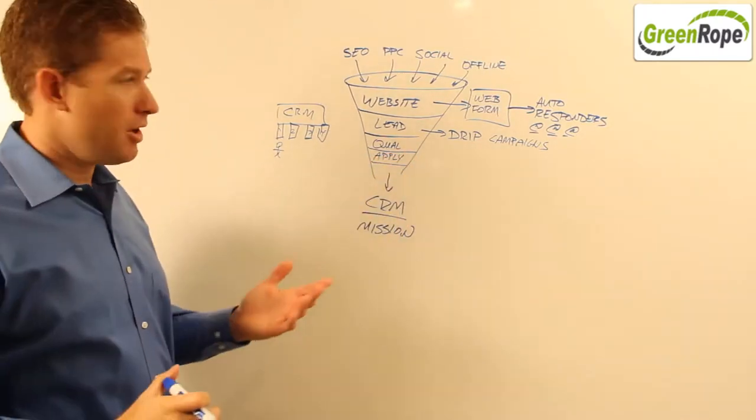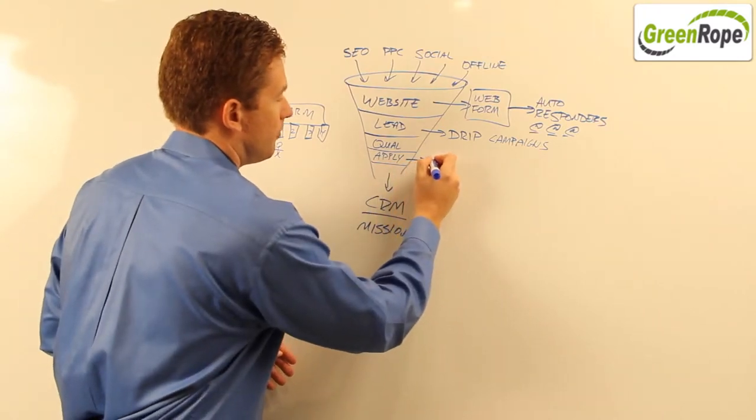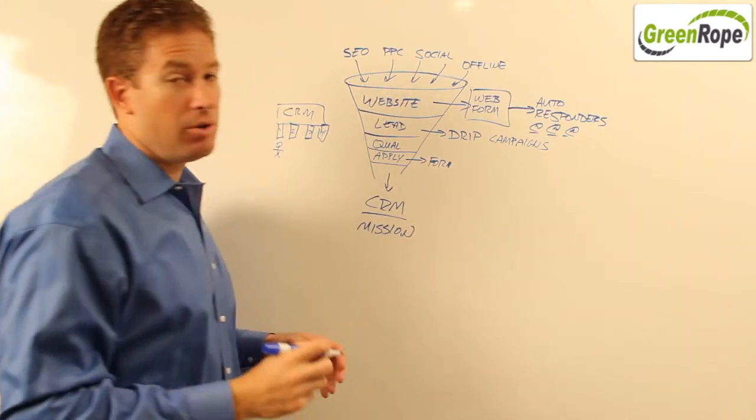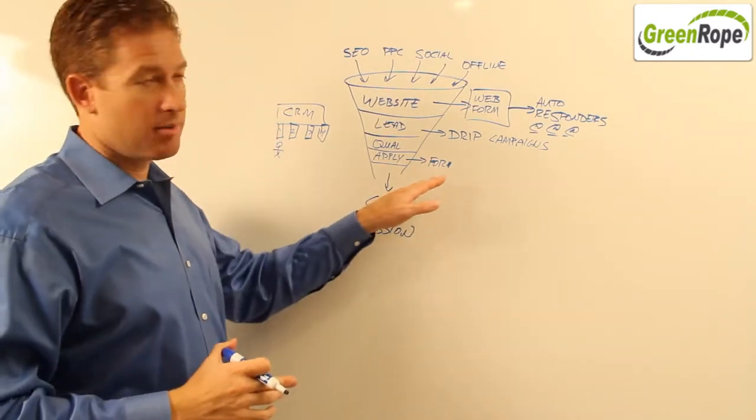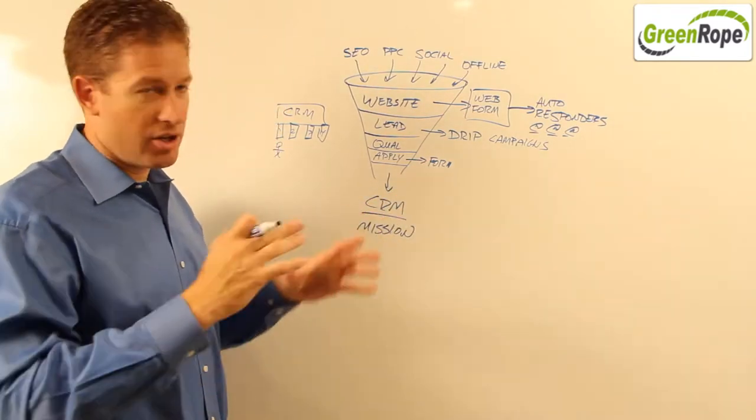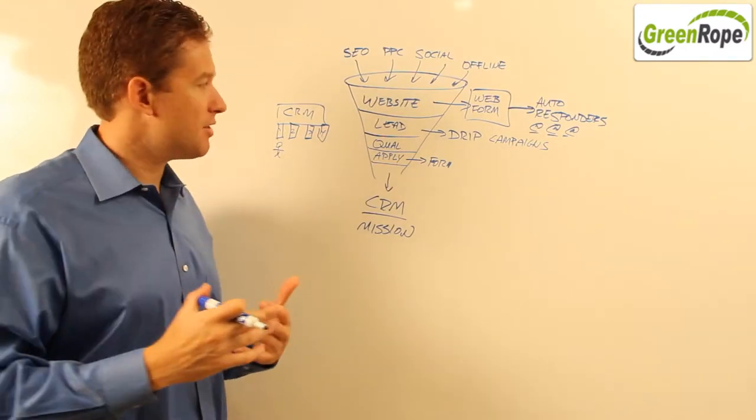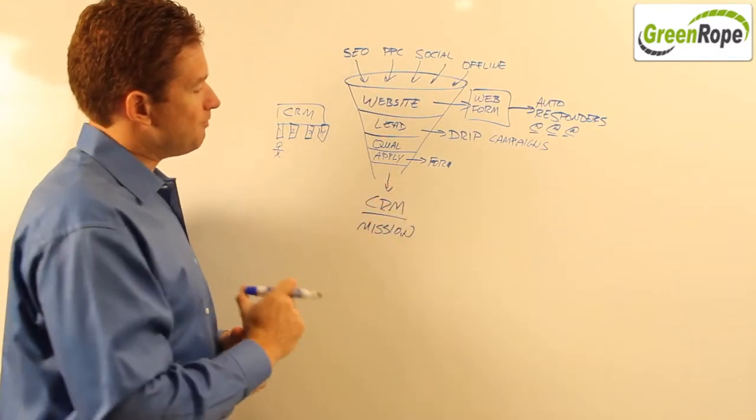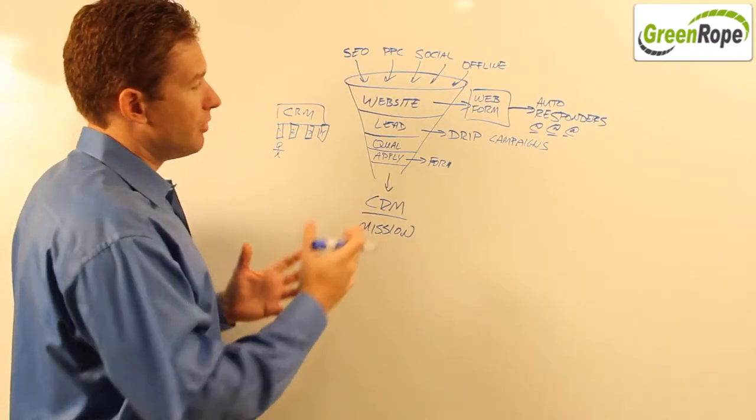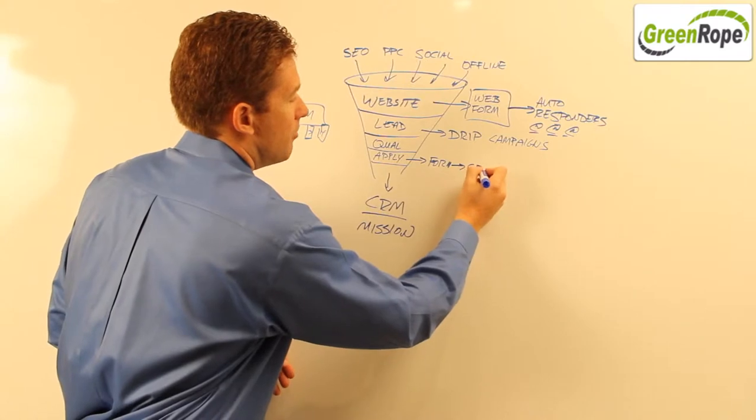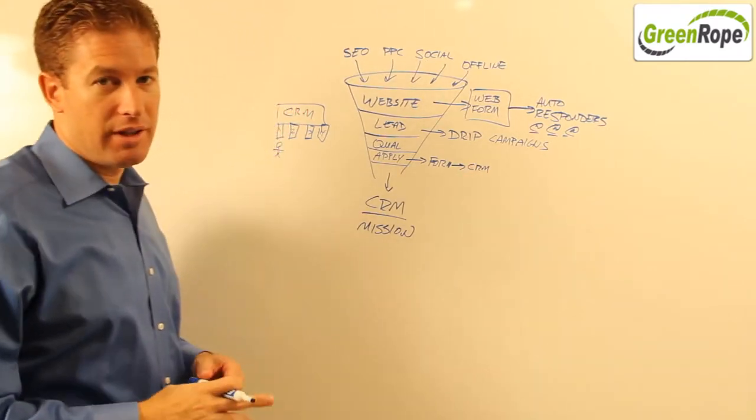Now, an application form is another thing that we can build in with our web form. So once we get the form built, and you can create a form very flexibly within GreenRope, where you can have logic showing different things that you want to show them based on questions you might answer. So we create this form, and that, of course, flows into your CRM, and then we're able to keep track of them and the ongoing relationship that they have with you.